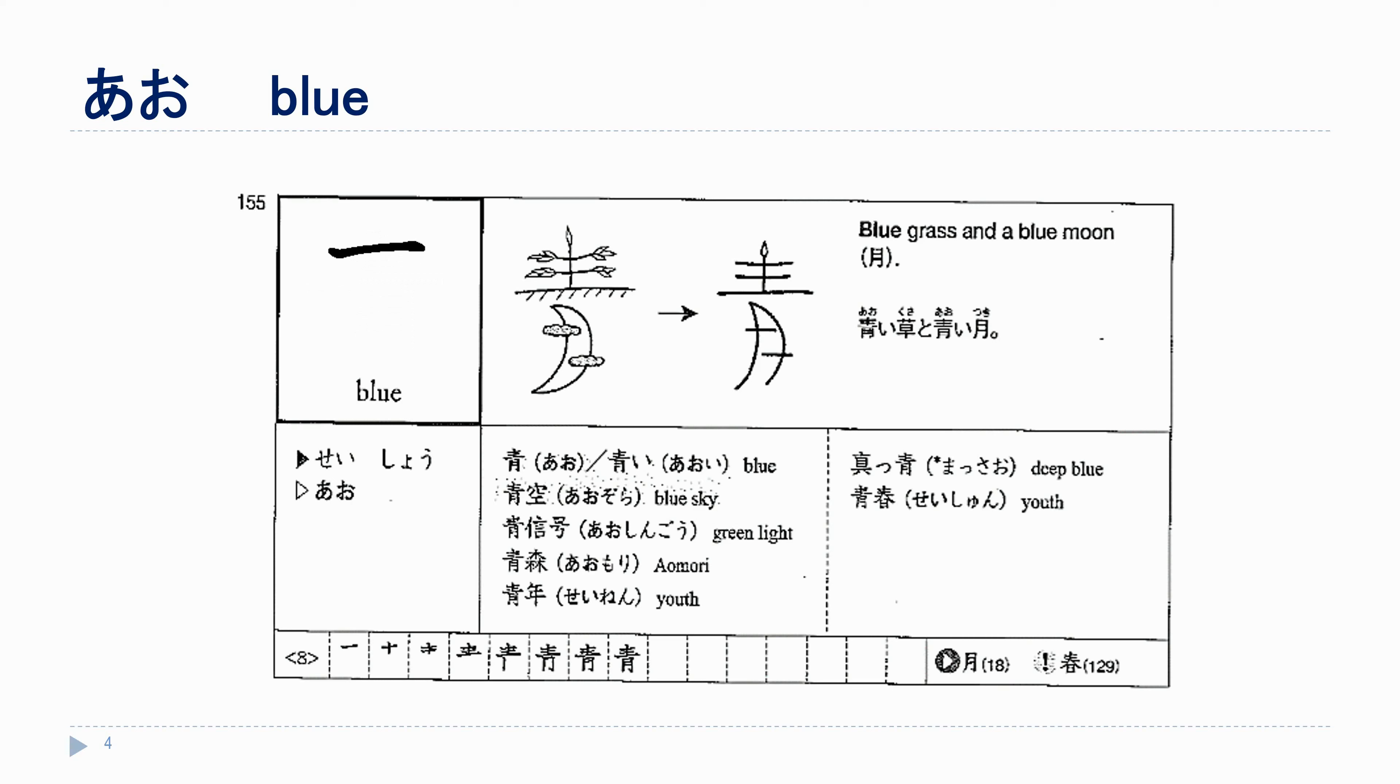いちにさんよん. Go, roku, nana, hachi. Again, いちにさんよん. Go, roku, nana, hachi.